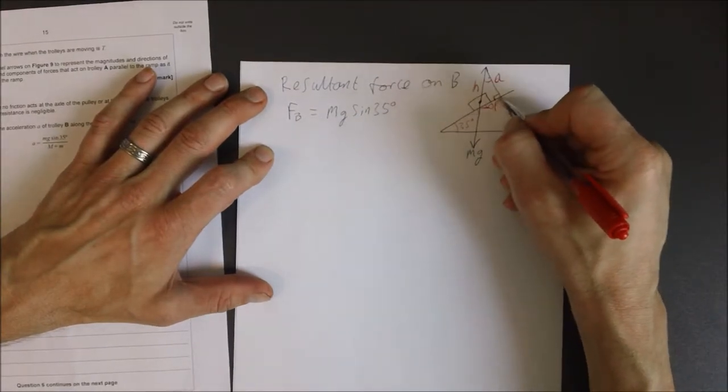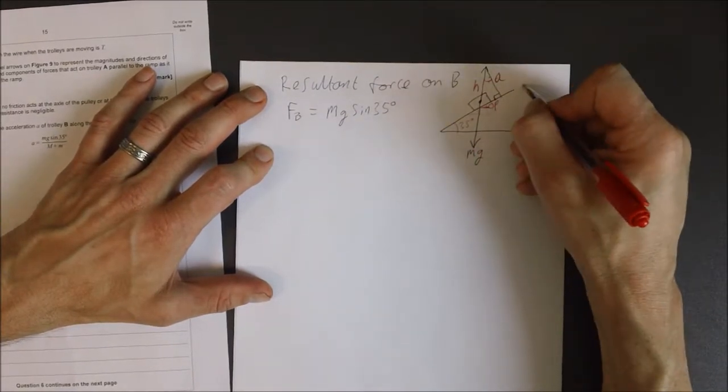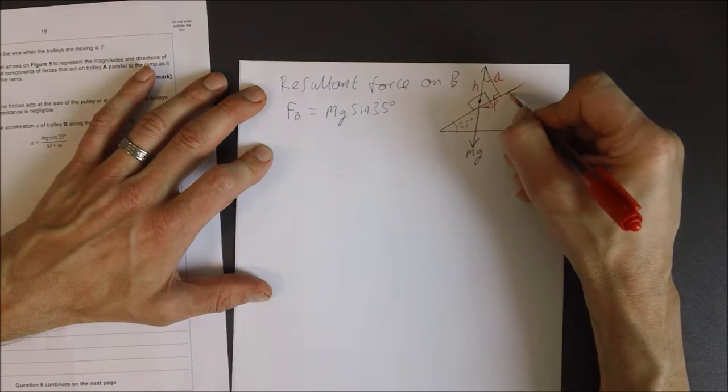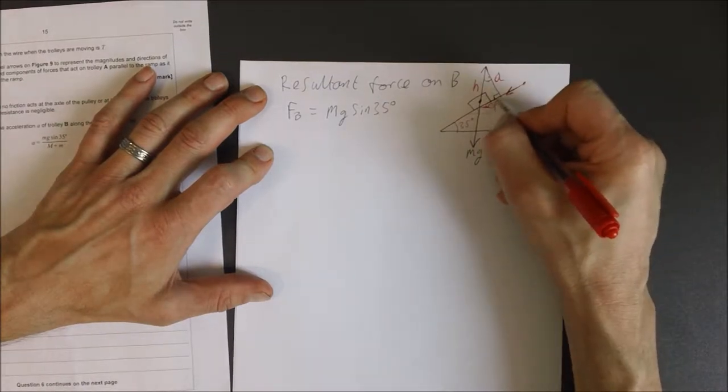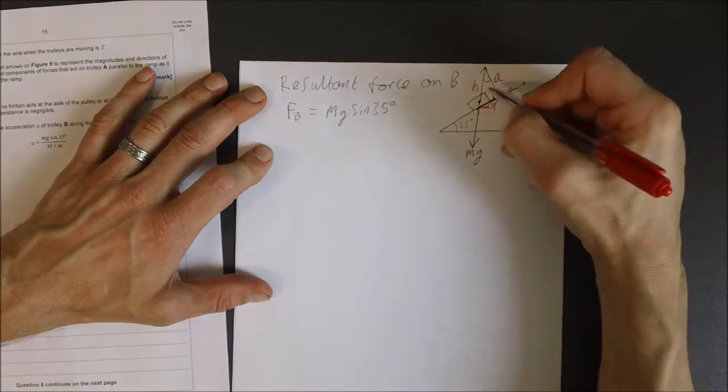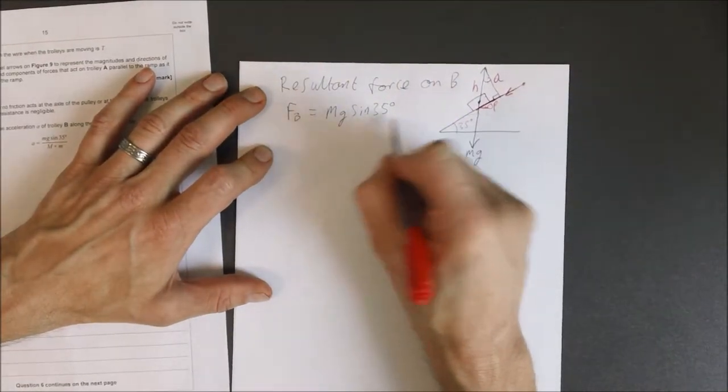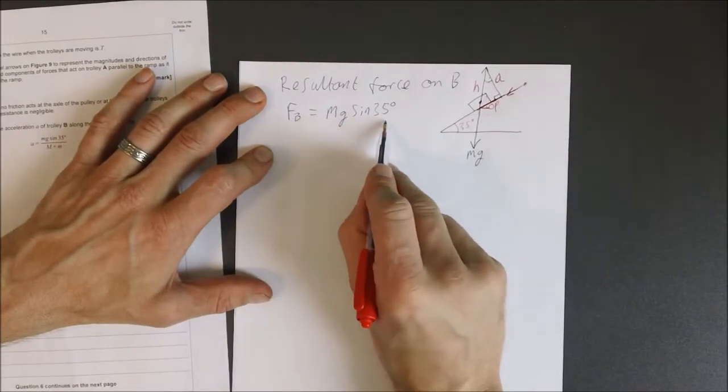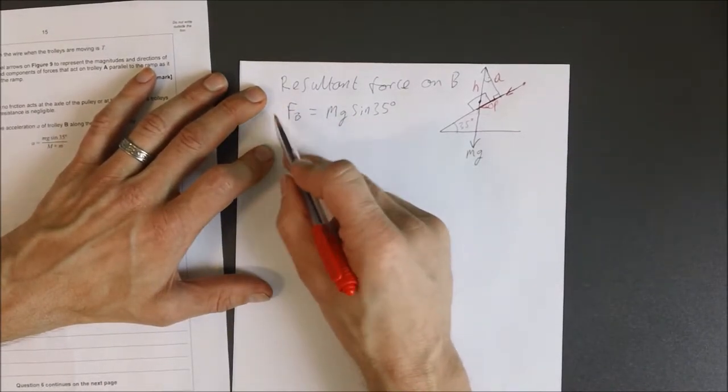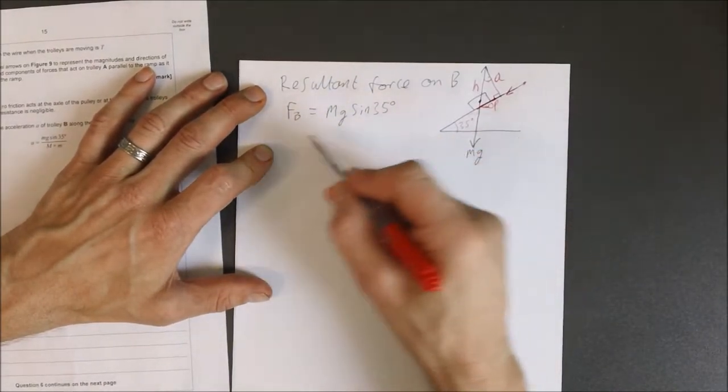So if I want to work out a component going down the slope, it's going to be this part of the triangle here. It's going to be the opposite, which then becomes sine 35. So it's mg sine 35 is going to equal the force acting down the slope because of B.